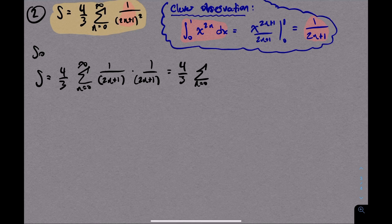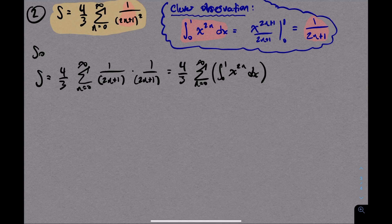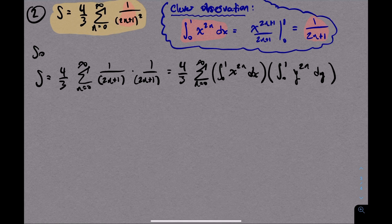And then I want to do the same thing with the second 1 over 2n plus 1, but instead of using x, I'm going to use the variable y. Why would I use y? Because I can. My goal here is to turn this into a double integral, so I'm formally introducing a new variable.